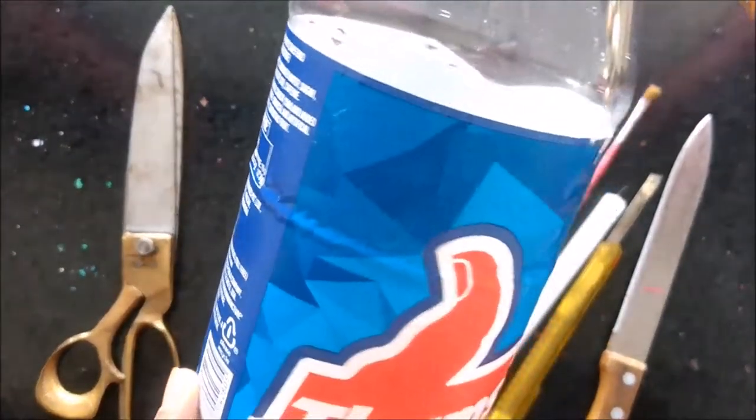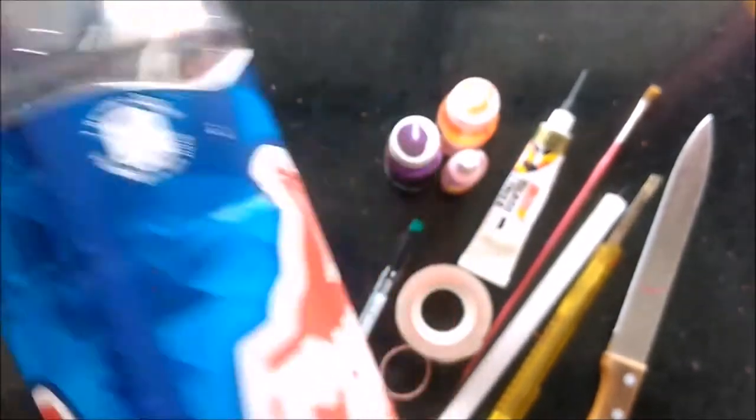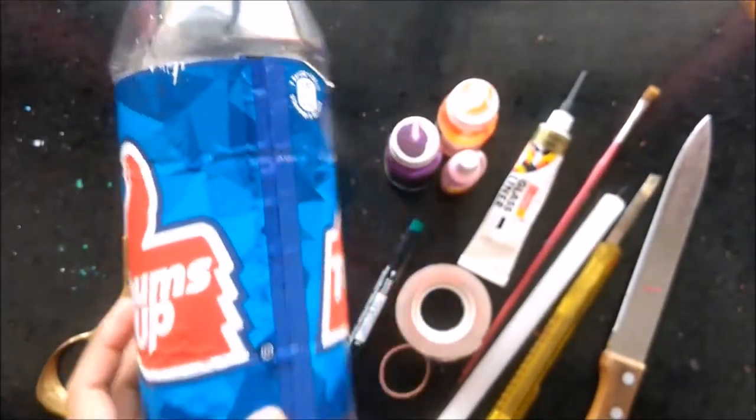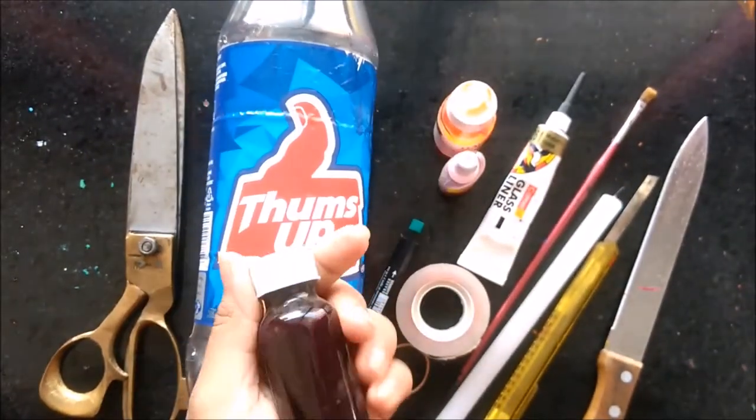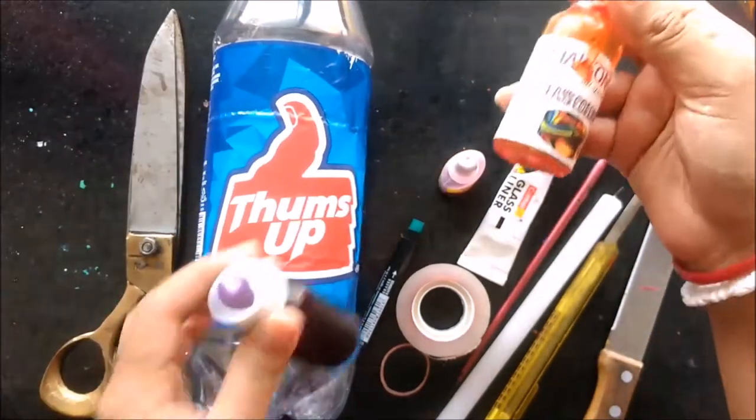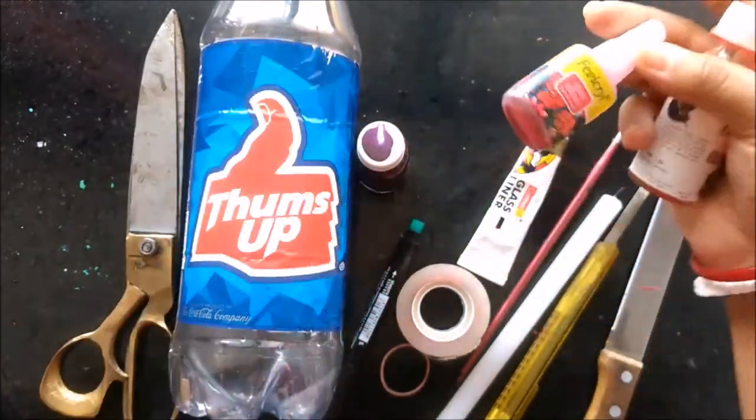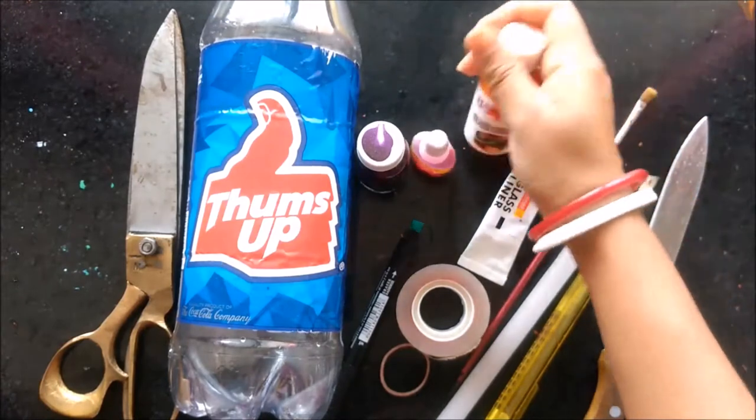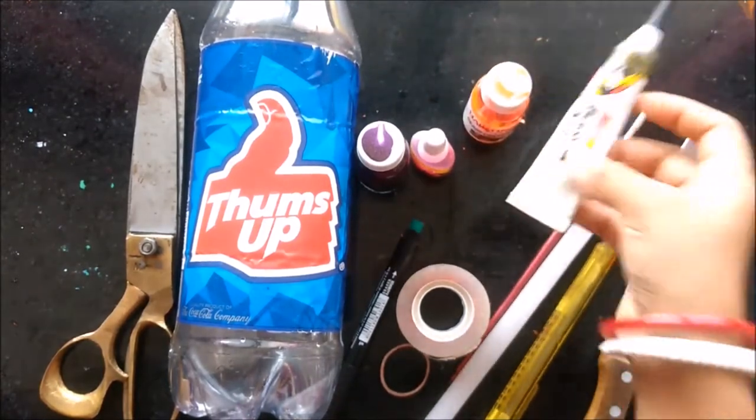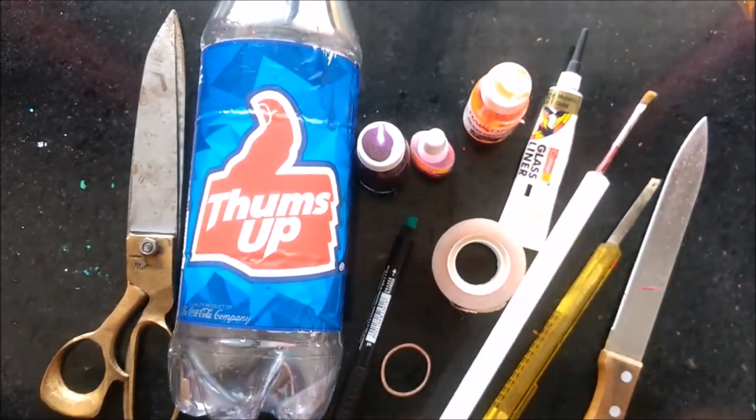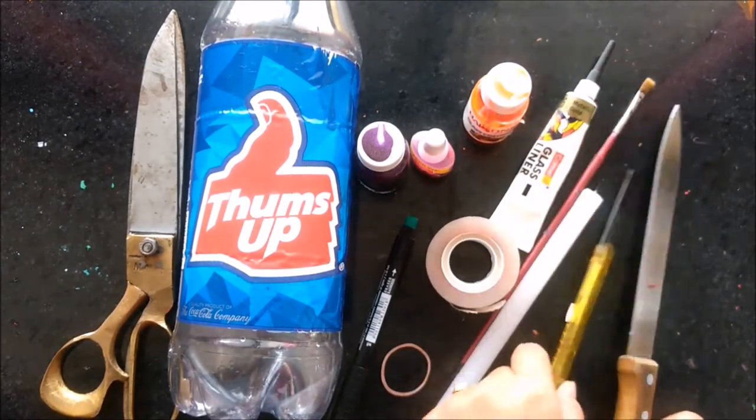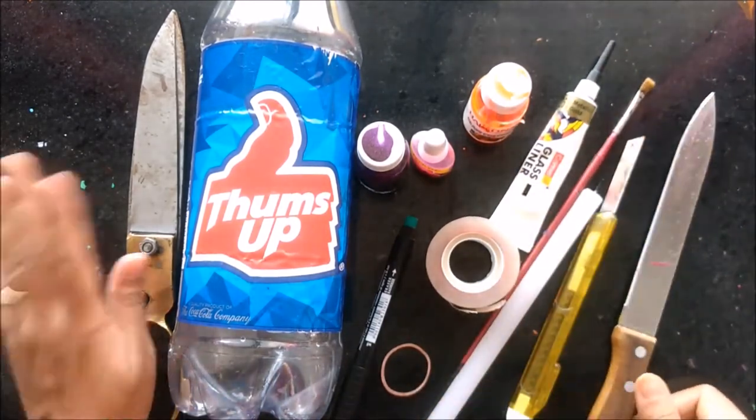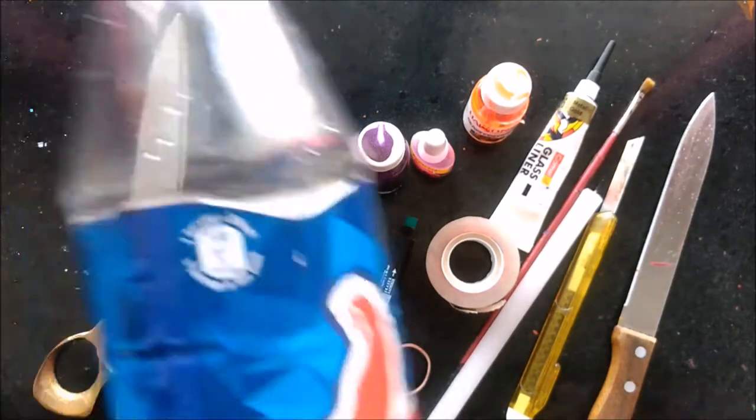First of all we need a bottle, any cooling bottle or any bottle size you want to recycle. Some glass colors - these are oil-based colors and this is fabric glass color which is water-based. This is metallic gold glass liner, cellotape, marker, candle, paint brush, you can use knife, bottle cutter and workspace.